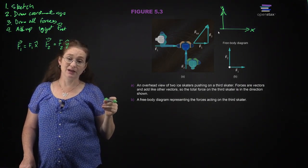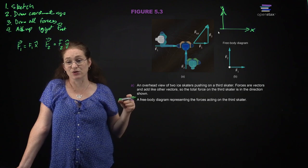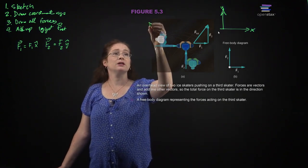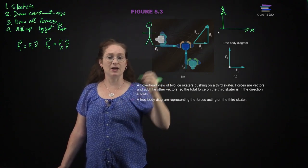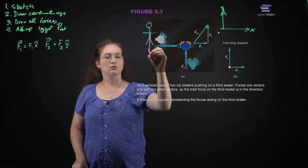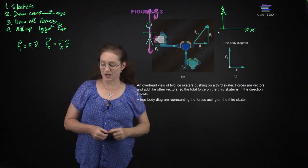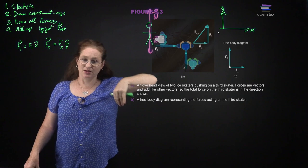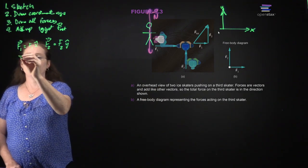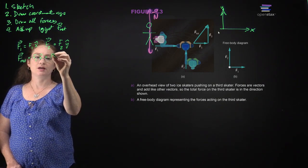Technically, you have gravity and the normal force — the force perpendicular to a surface. The skaters are on an ice rink, and since the skater doesn't move up or down, gravity and the normal force cancel out. So the total force is F1 x-hat plus F2 y-hat.